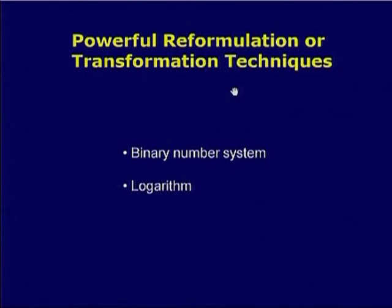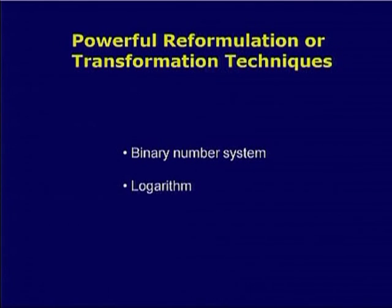Changing the statement and casting information in different forms is the basis of many powerful transform techniques in mathematics. For example, logarithms: to multiply two numbers, convert them to logarithms, add them, and take the anti-log — this changes multiplication into addition. Binary number system: you can express the same numbers in a different form — binary — and all computers use this. By transforming information into a different form, you may be able to get solutions more easily. This is a very powerful method.